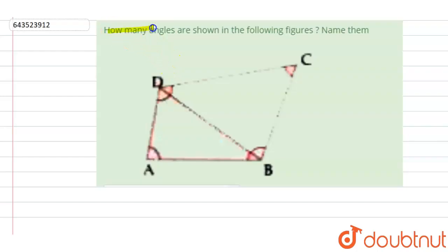Hi, let's start the question. The question says that how many angles are shown in the following figures? Name them. So first we have to count the total number of angles which are present in this figure, and then we have to write their name.